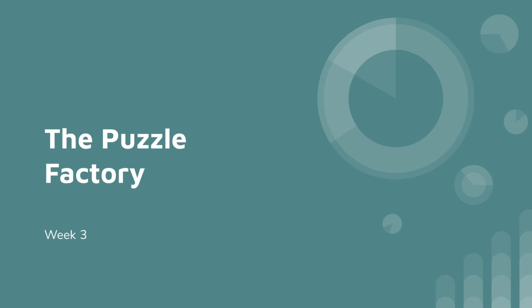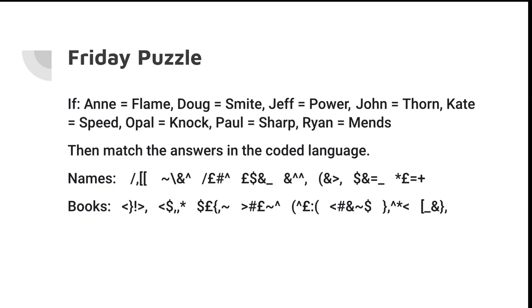With that said, let's see the puzzle of the day. If Anne has Flame, Doug has Smite, Jeff has Power, John has Thorn, Kate has Speed, Opal has Knock, Paul has Sharp, and Ryan has Mends, then match the answers in the coded language.